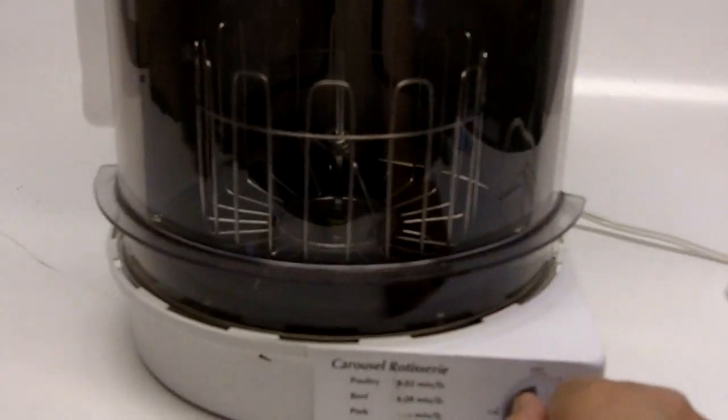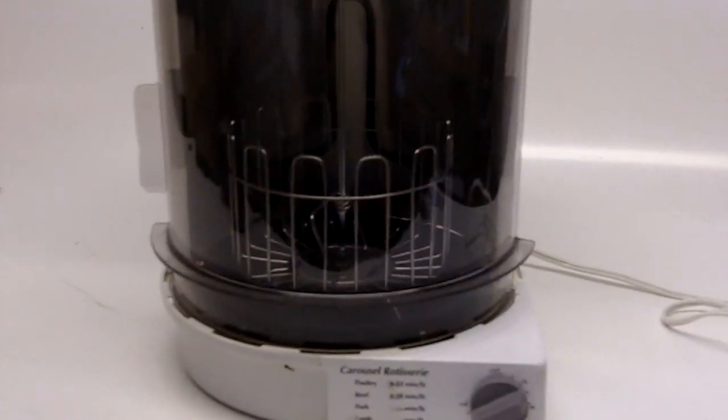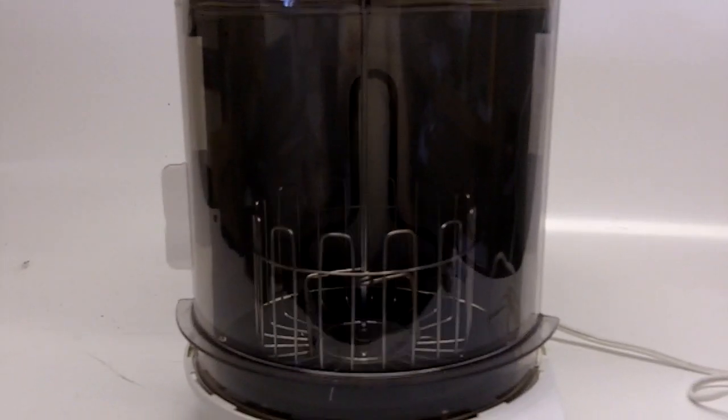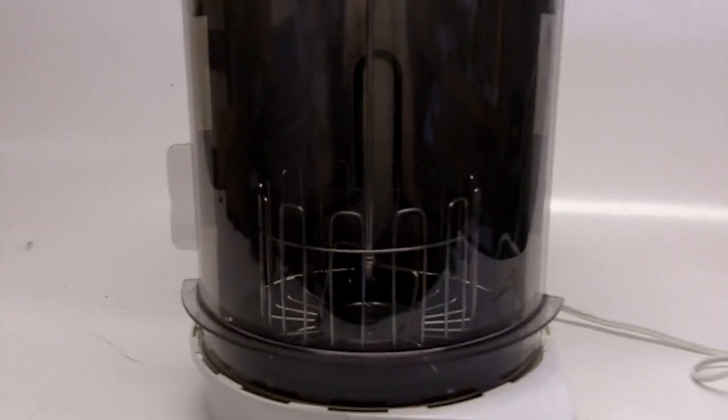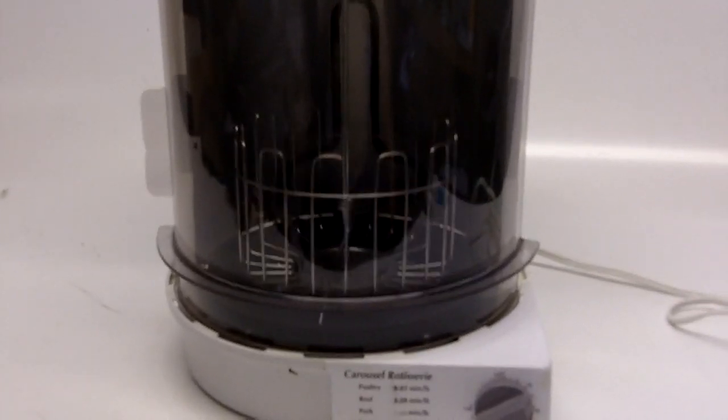Now let's put everything back in here and then fire this up so that you see that it does work and will work for you from the beginning. You basically just turn it on, and you can see that it will start to turn so your chicken or your roast will rotisserie.